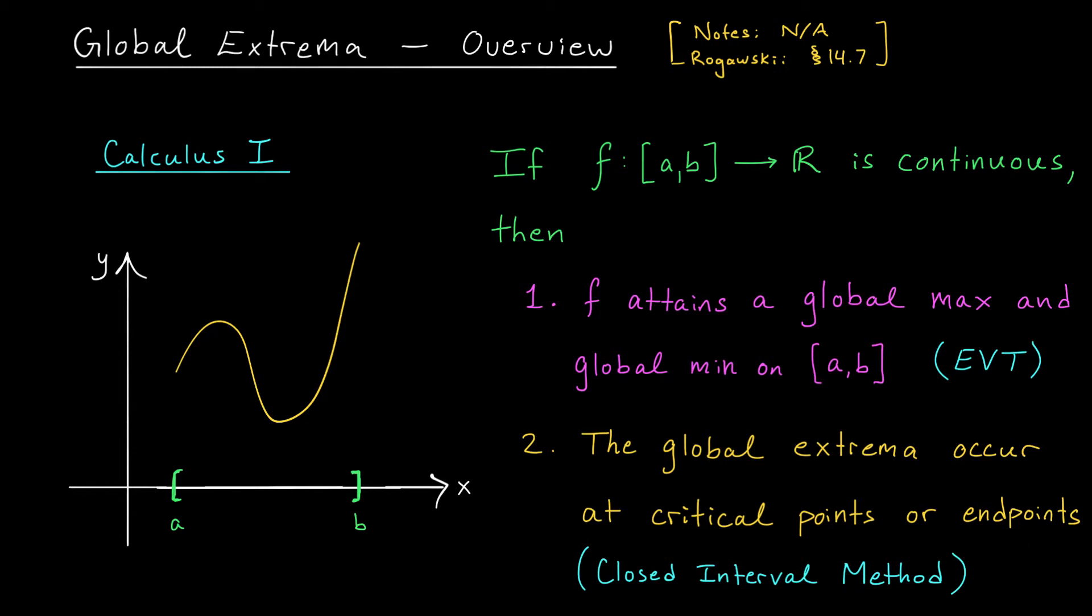So in our case the candidates for global max and min are the two end points x equals a or x equals b or perhaps these two critical points. We have a critical point here and a critical point here.